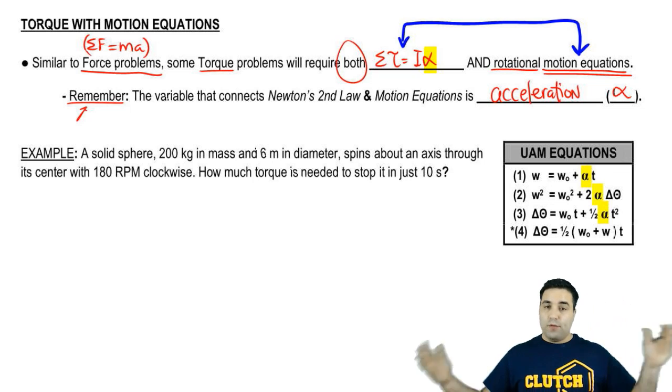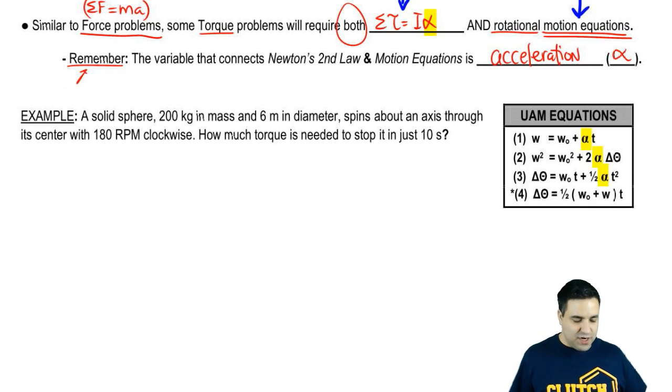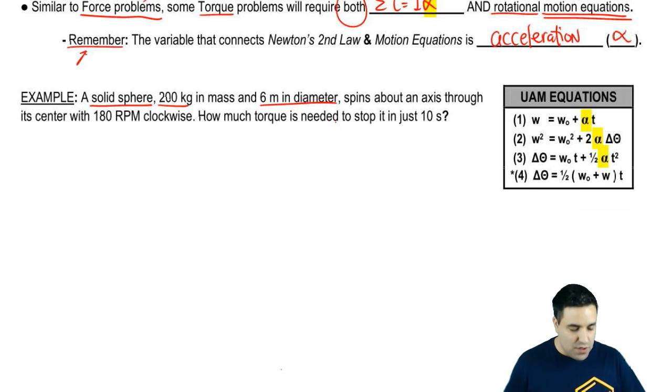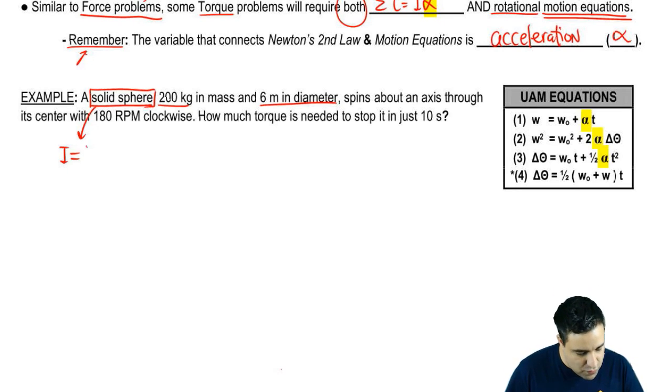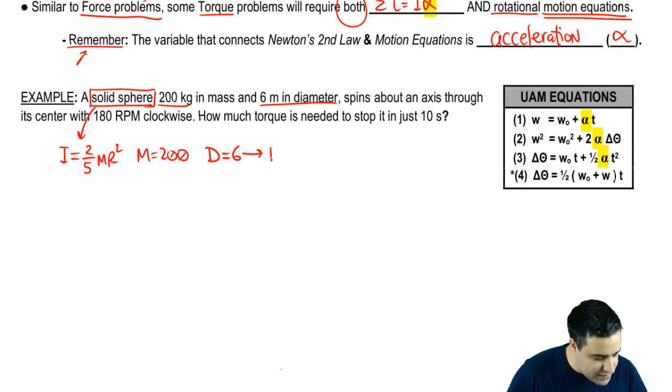We got more equations and more variables, but it's not harder, it's just more stuff. Let's check out this example here. I have a solid sphere, and I give you the mass and the diameter. Because it's a solid sphere, I'm going to use the moment of inertia of a solid sphere, which is 2 over 5 mR squared. I got the mass, the mass is 200, and I have the diameter.